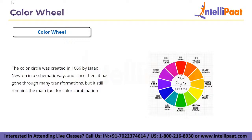Primary colors are the three pigment colors that cannot be formed by any combination of other colors. Combining primary colors gives us the secondary ones, and the mix of primary and secondary colors gives us the tertiary colors, which usually have two names such as red-violet. The color circle was created by Isaac Newton in a systematic way.